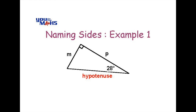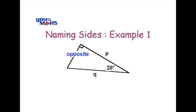Here are the answers to the first example. The side which is the longest and is away from the right angle is called the hypotenuse. The side opposite the angle marked 28 degrees is called the opposite, and the side next to the 28 degrees is called the adjacent side.